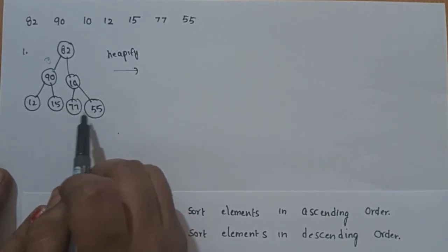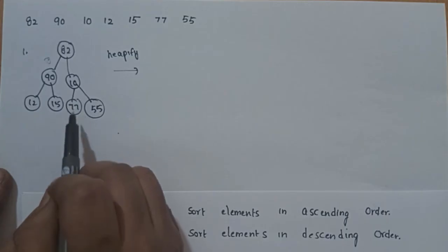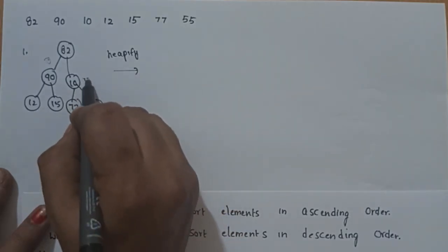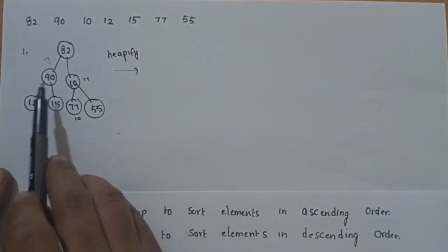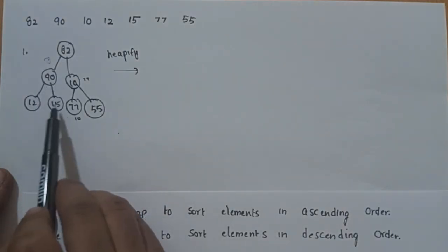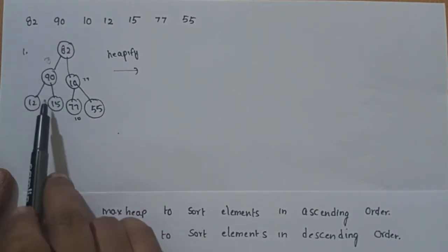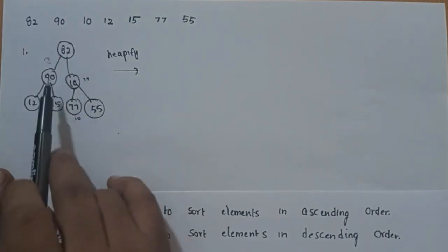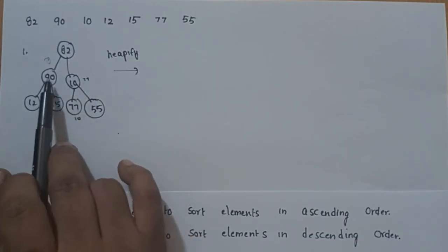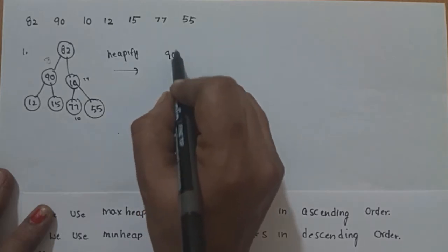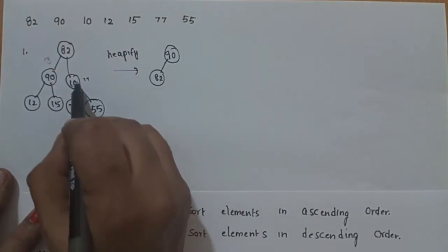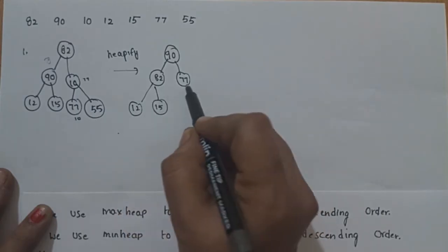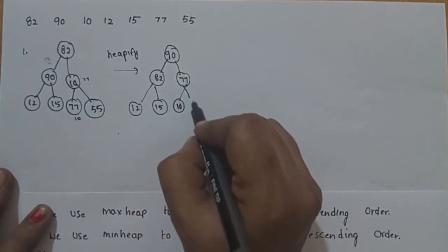The children are 77 and 55. Since 77 is greater, we swap the binary tree to satisfy the max heap property. Now, checking root node 90 with its children 82 and 77: the values are 90, 82, 77, 12, 15, 10, 55. The component in the binary tree satisfies the max heap property.